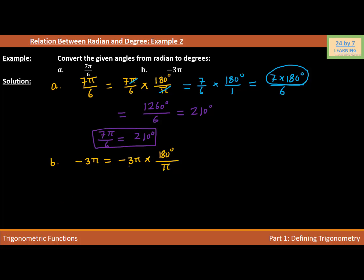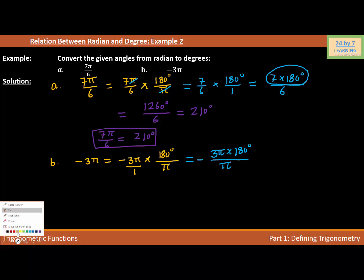Negative 3π is basically negative 3π over 1. Multiplying numerator by numerator and denominator by denominator, I get negative 3π times 180 degrees over 1 times π. Pi is common in the numerator and denominator, so I cancel π out. Only negative 3 times 180 remains, with 1 in the denominator.